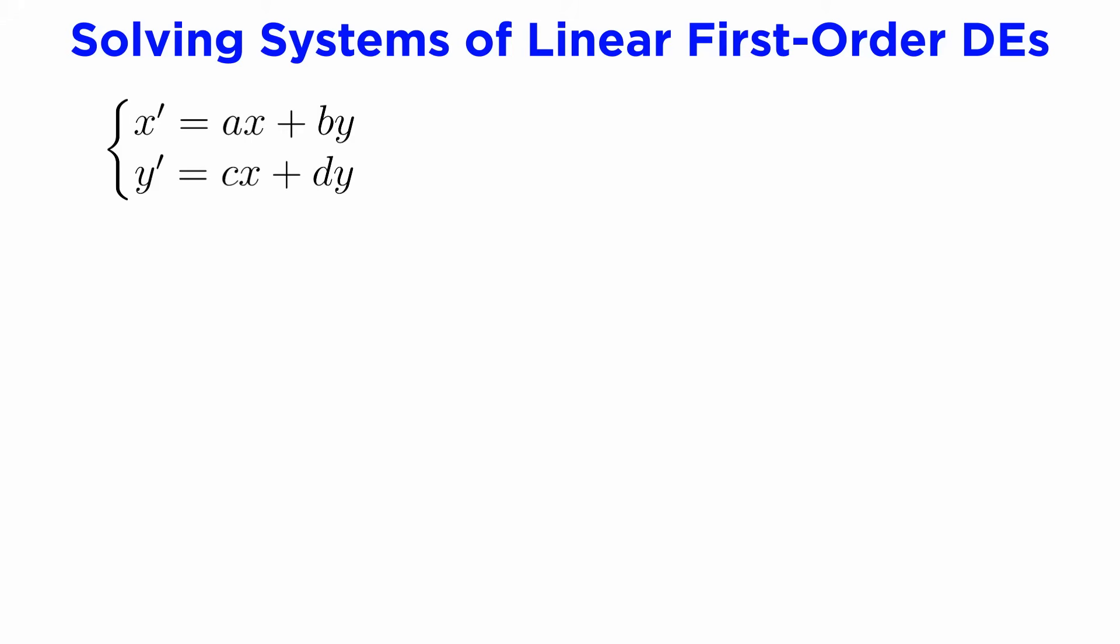Let's start with a general form of a coupled system of linear first-order differential equations with constant coefficients, which can be written as x prime equals ax plus by and y prime equals cx plus dy. Notice that this sort of resembles the setup for simultaneous algebraic equations, and we can summarize these equations using a column vector for the unknown variables x and y.